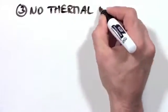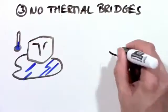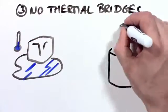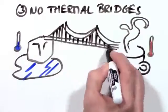3. No thermal bridges. A thermal bridge is like a road for heating energy in which warmth can travel right through your walls. As a matter of fact, most of our houses have thermal highways in our walls where heat can easily travel to the outside.